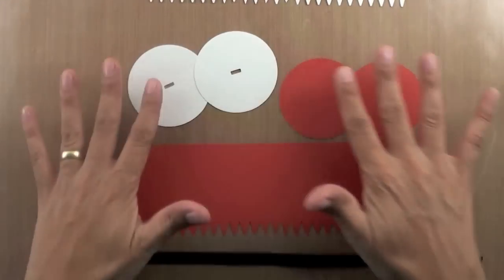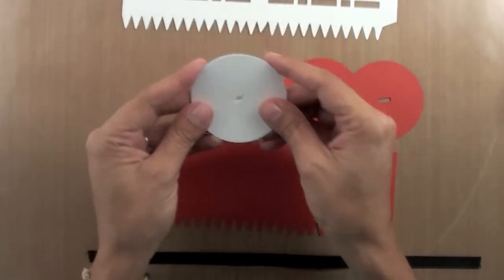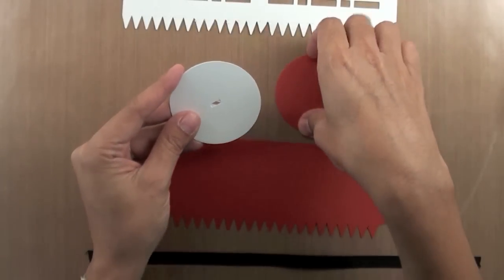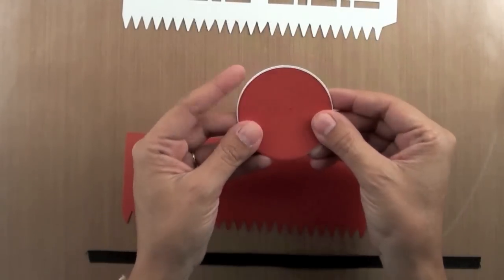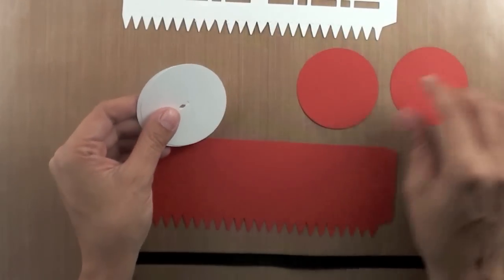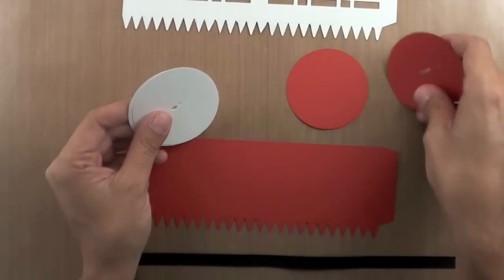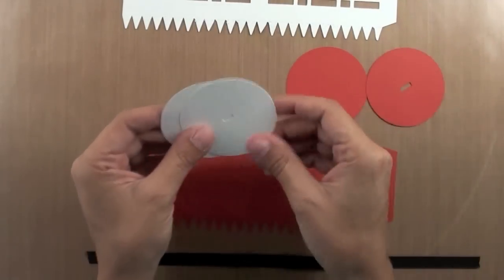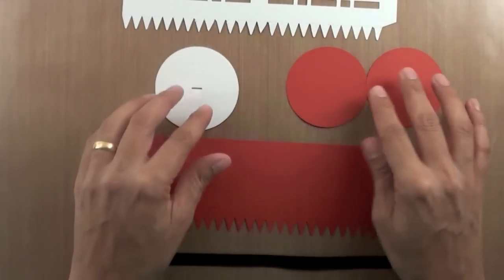Right now, you can tell the difference because of the colors, but when you get your files, you'll notice that the two tops are slightly larger than the two bases. Another difference is that the bases have one solid circle and one with a little slit in it, and the tops both have slits in them. So those are the big differences.